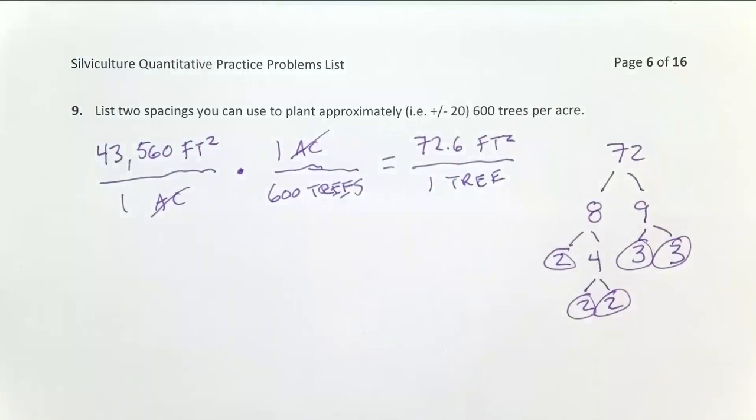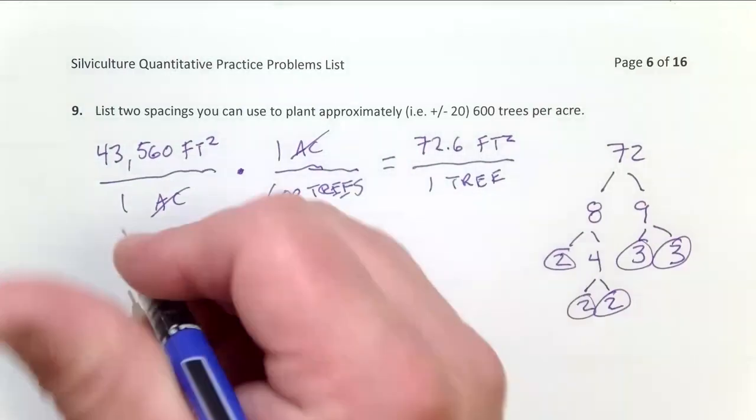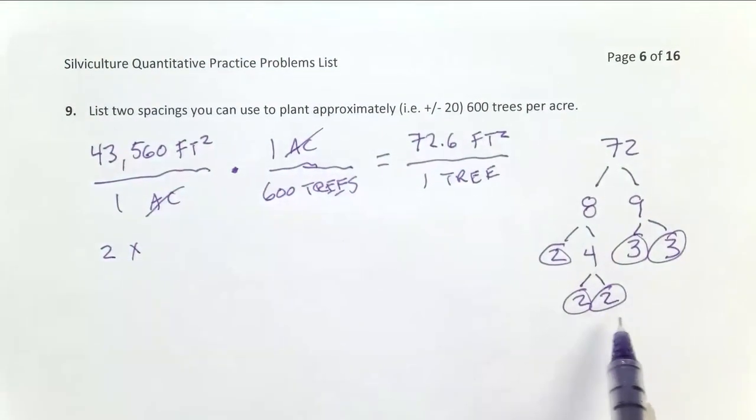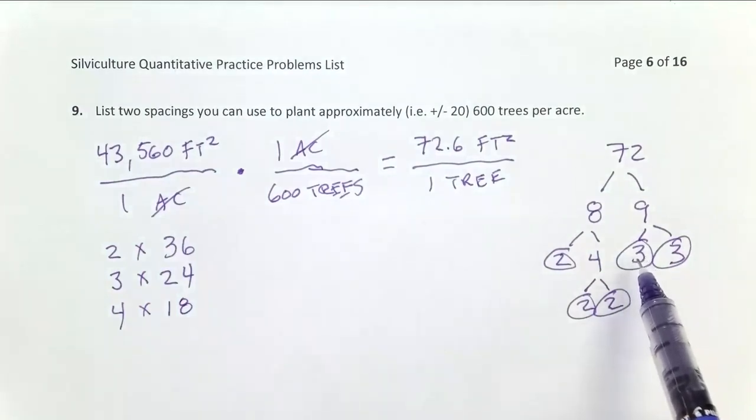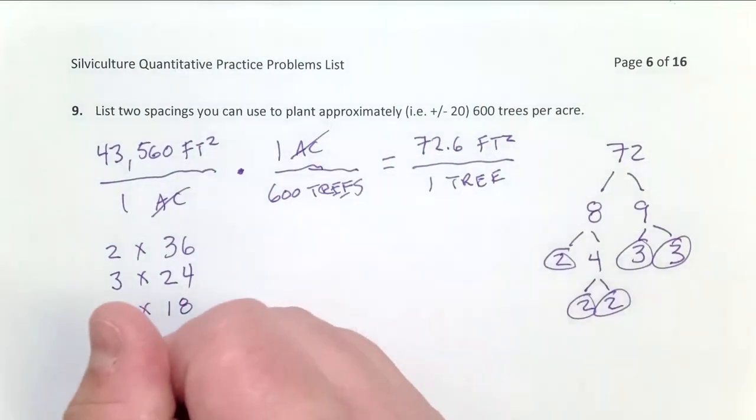So now I can start putting together my spacings. And so I can do 2 by 2 times 2 times 3 times 3. So that's going to be 4 times 3 is 12 times 3. That should be 36. So 2 by 36 foot spacing will give me about 600 trees per acre. I can do 3 by 2 times 2 times 2 is 8 times 3 is 24. That works. Now I can do 2 times 2, which is 4. So 4 by 2 times 3 times 3. So that should be 18. Okay. Now I can do 2 times 3 is 6, and then 2 times 2 is 4 times 3 is 12. So I should be able to do 6 by 12.